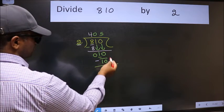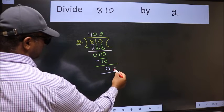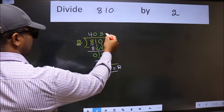No more numbers to bring down. So we stop here. This is our remainder and this is our quotient.